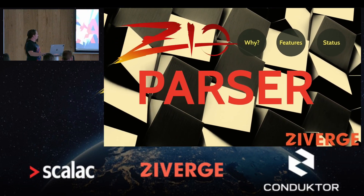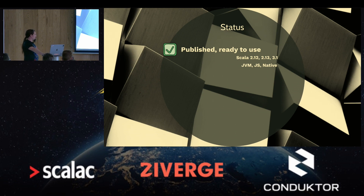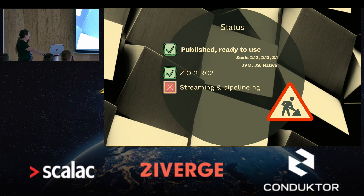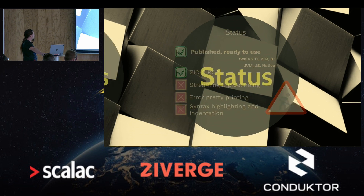So those were the features I wanted to show. Finally, a few words about its status: it's an experimental library but it's published, ready to use for all Scala versions and platforms, using the latest ZIO 2 version. The streaming support I mentioned was part of my original prototype but it's not in there right now — it only works with strings currently. The pretty printing is something I did for this presentation and will push it to the repo next week. Syntax highlighting and indentation are things that worked in the past but are not on the main branch right now. That's it.